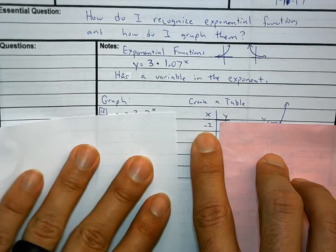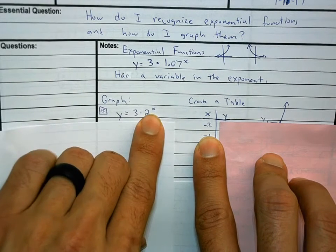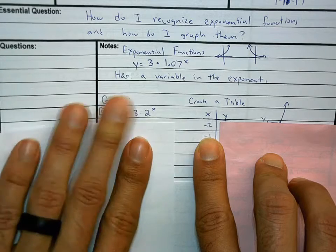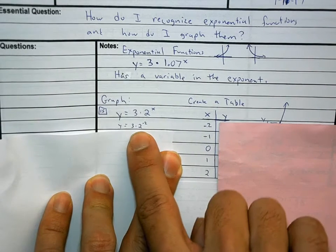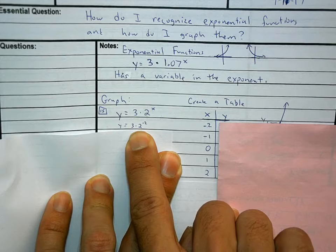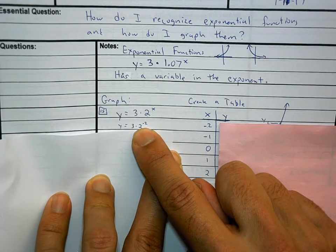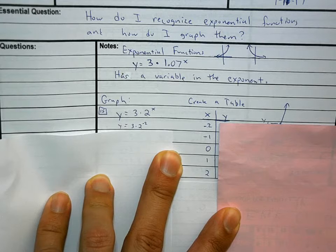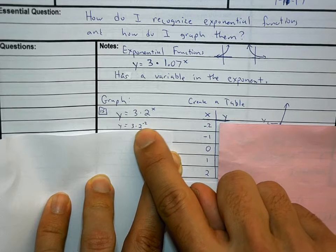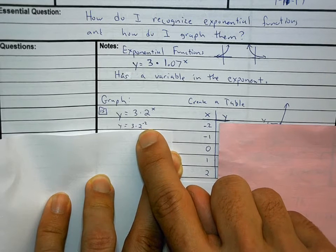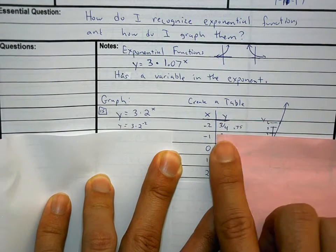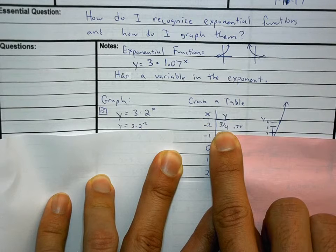Here's how we do it: plug in negative two to get 3 times 2 to the negative two power. By hand, two to the negative two moves to the denominator and becomes 2 squared, which is 4. Three over four equals 0.75. Then plug in negative one: 3 times 2 to the negative one is three over two, or 1.5. For x equals zero, anything to the power of zero is 1, times 3 gives us 3.